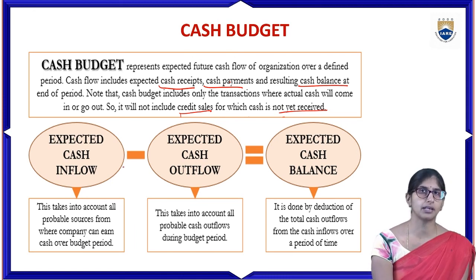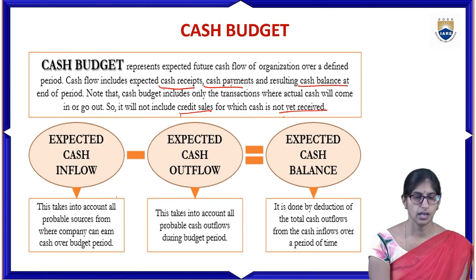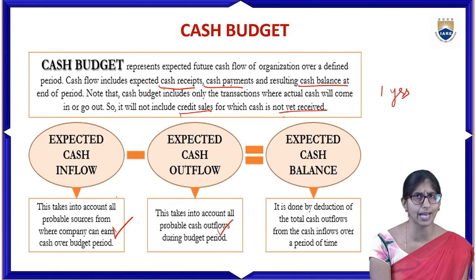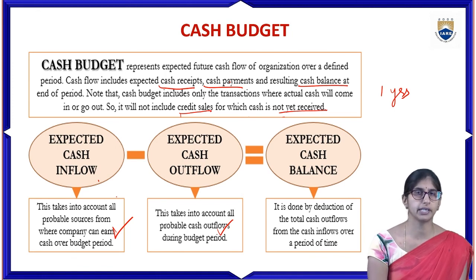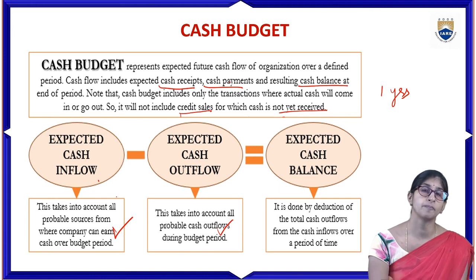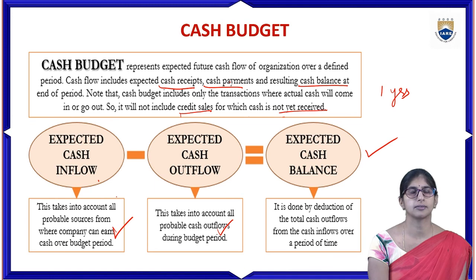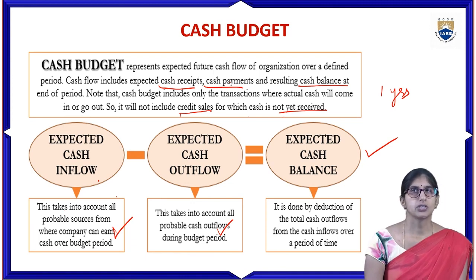Expected cash inflow takes into account all probable sources from where the company can earn cash over the budgeted period. Cash outflow refers to probable cash payments during the budgeted period. If budgeting for one year, we check what total cash inflows we expect to receive and what amount we expect to spend. After deducting cash outflows from cash inflows, we get the cash balance.